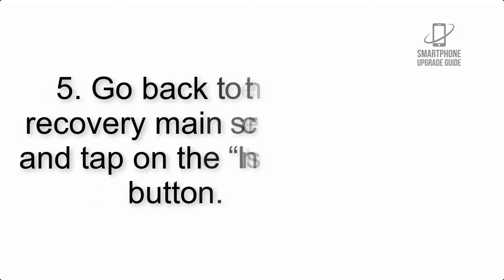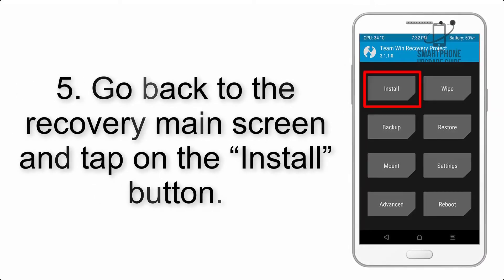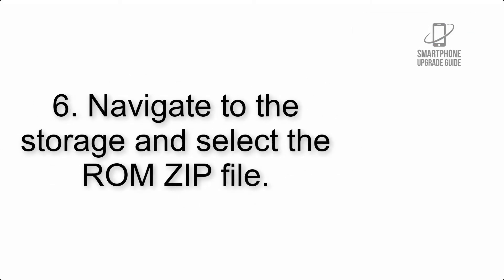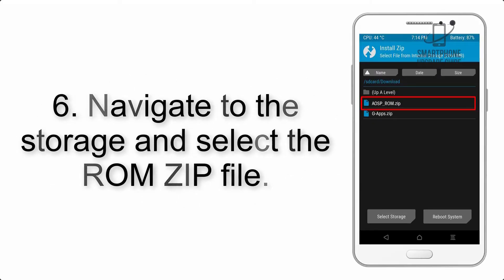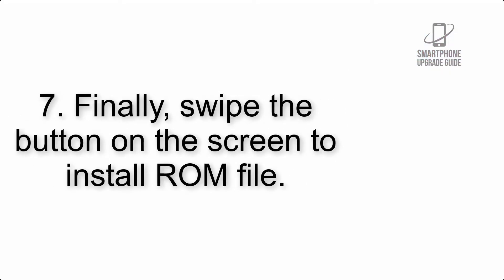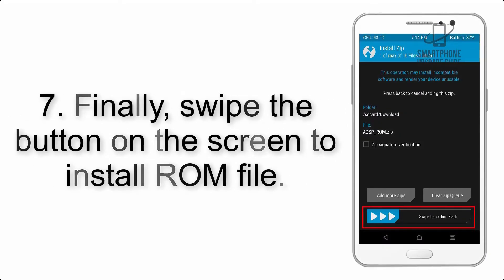Step 4: Swipe the button to wipe the device. Step 5: Go back to the recovery main screen and tap on the Install button. Step 6: Navigate to the storage and select the ROM zip file.